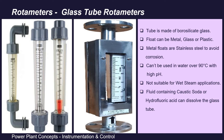In glass tube rotameters, the tube is made up of borosilicate glass and the float can be metal, glass, or plastic — in case of metal floats, stainless steel is preferred to avoid corrosion. Glass tube rotameters cannot be used in water over 90°C with high pH, which softens the glass, nor in wet steam applications. Moreover, if the fluid contains caustic soda or hydrofluoric acid — which dissolve the glass itself — these rotameters cannot be used in those applications.